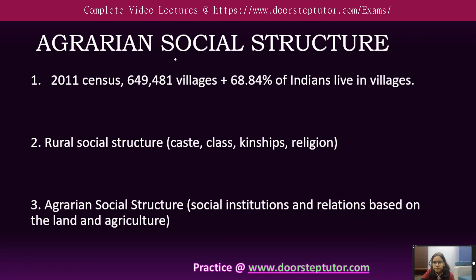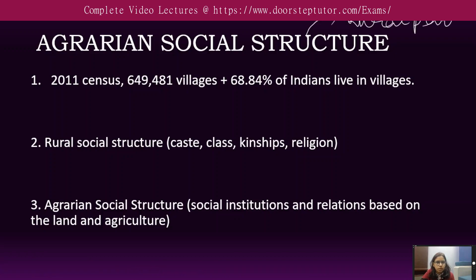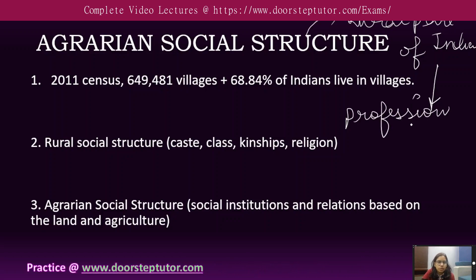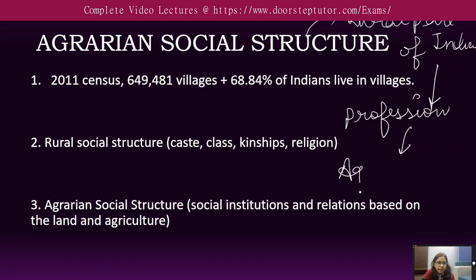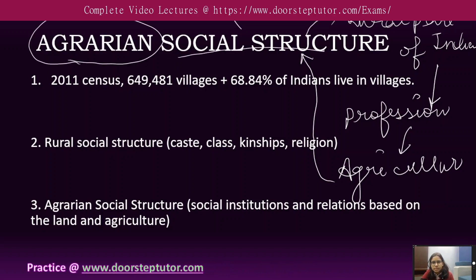Agrarian social structure will come under the rural part of India. Why? Because a part is considered rural because of the professions there. The main profession in mostly rural societies — and we use the word 'mostly' — is agriculture. So when the profession is agriculture, we will have an agrarian social structure. Agrarian social structure means their social structure is decided by agrarian relations between land and agriculture.